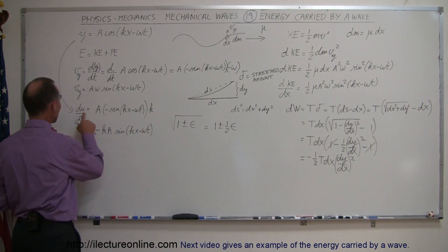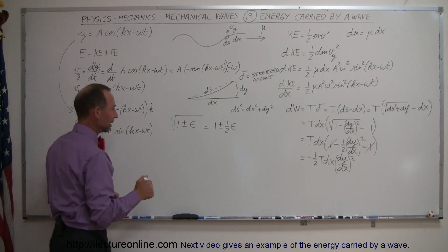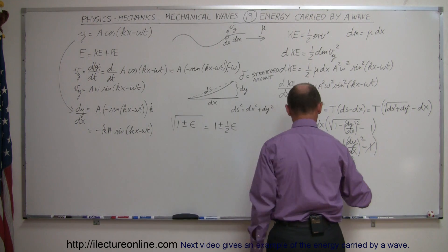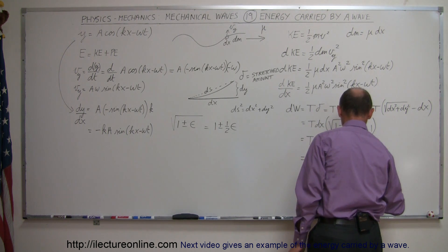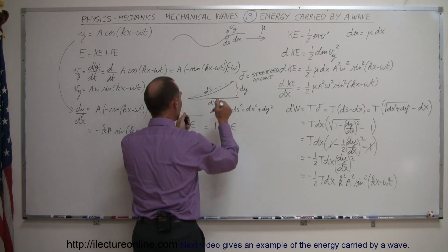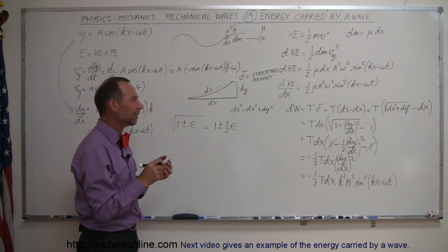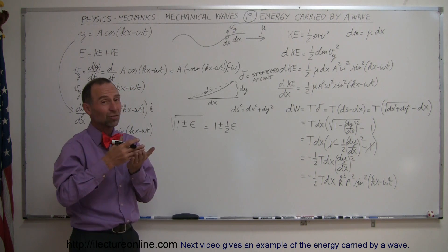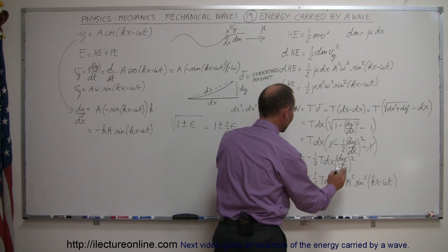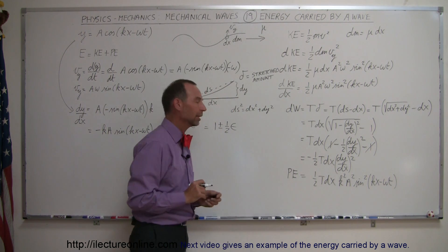We found dy/dx by differentiating y = A·cos(kx − ωt) with respect to x, giving dy/dx = −kA·sin(kx − ωt). Squaring that and plugging in, the work done equals −½·T·dx·k²A²·sin²(kx − ωt). That is the work done to stretch the string, which equals the potential energy added. The negative comes from the spring-like restoring force (F = −kx), so this is actually a positive potential energy put into the system. Dividing by dx, the potential energy per unit length is ½·T·k²·A²·sin²(kx − ωt).